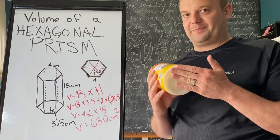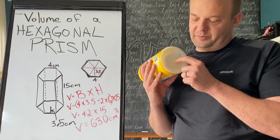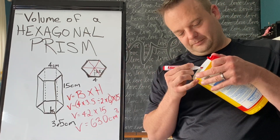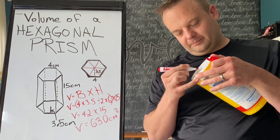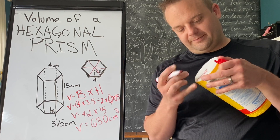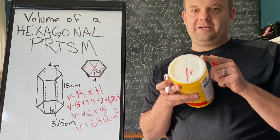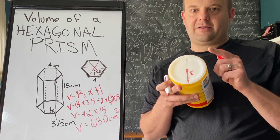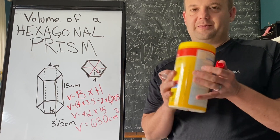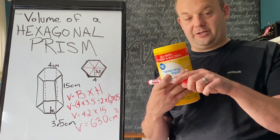The area of a circle is pi times the radius squared. The radius is from the center to the edge — pi is 3.14 — so pi times the radius squared times whatever height this is gives you the volume of a cylinder.